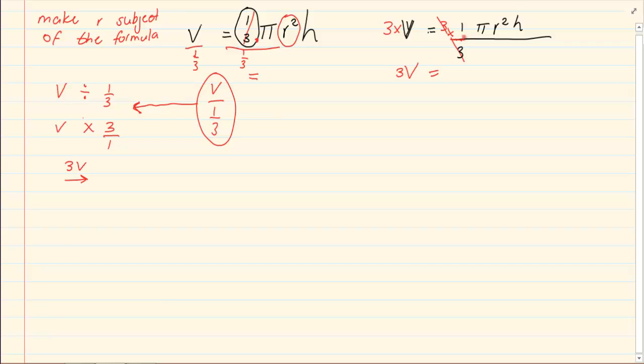Now we've got rid of the three. The next thing we want to get rid of is the pi and the h. Because it is multiplying I am going to divide so they can cancel. But what you do on one side you do on the other side. So I am going to divide by pi and h.